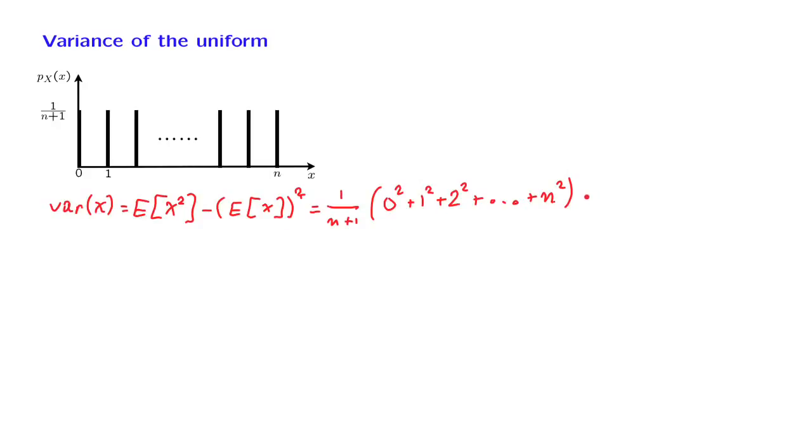And then there's the next term. The expected value of the uniform is the midpoint of the distribution by symmetry, so it's n over 2, and we take the square of that. Now to make progress here, we need to evaluate this sum.